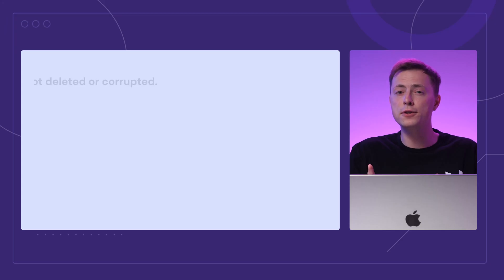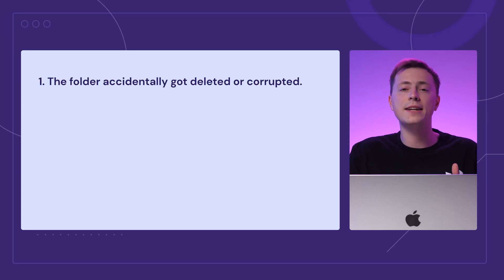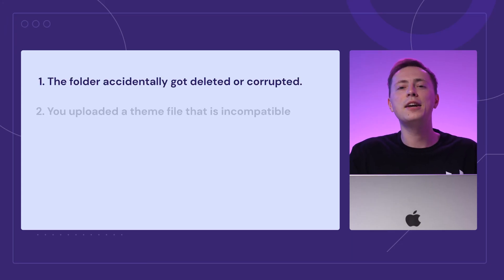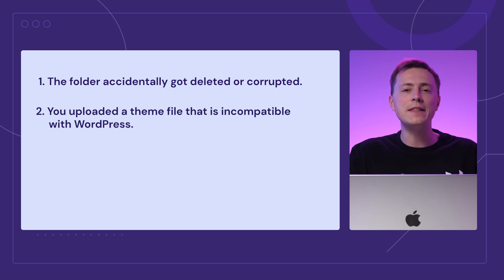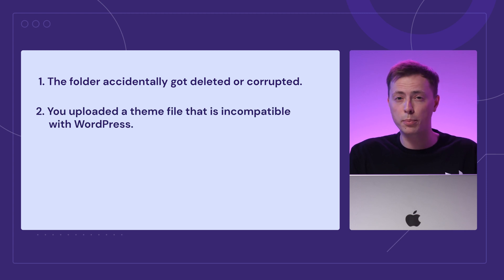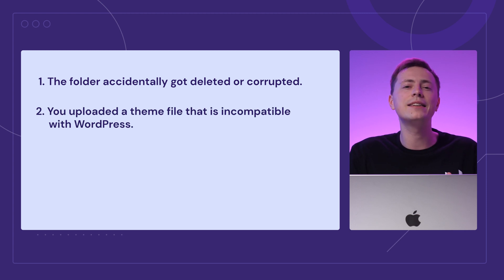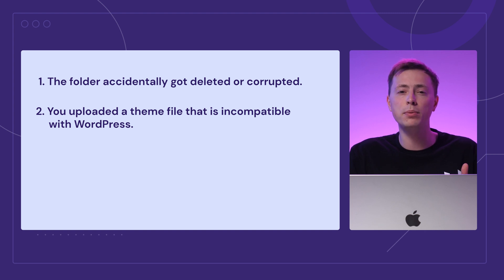A style.css file could be missing for numerous reasons. First, the folder accidentally got deleted or corrupted. Second, you uploaded a theme file that is incompatible with WordPress. For example, you mistakenly downloaded a theme file for another CMS like Drupal or Joomla.